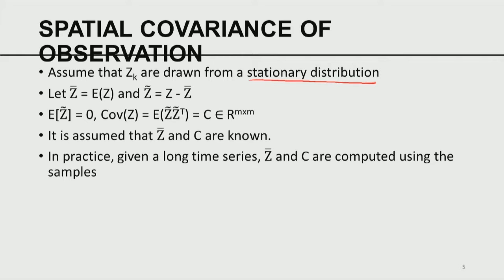Given this stationary distribution, z-bar is the mean of z, and z-tilde is the anomaly z minus z-bar. The expected value of z-tilde is 0. The covariance of z is given by the expected value of z-tilde times z-tilde transpose, and I am going to call it C. So C is an m by m matrix that talks about the covariance of the observations from different locations. It is assumed that both the mean and the covariance of the observations are known.